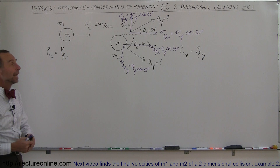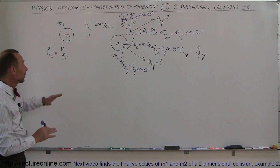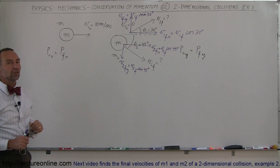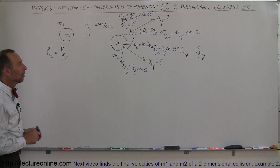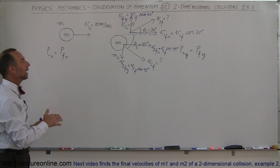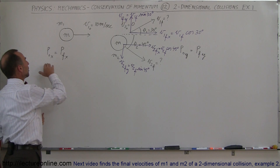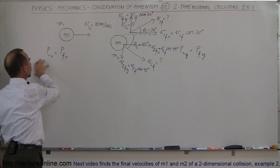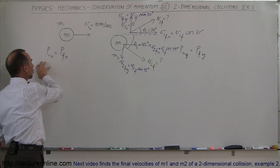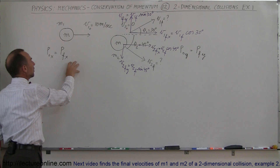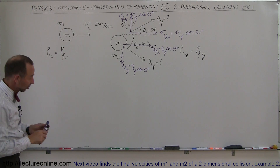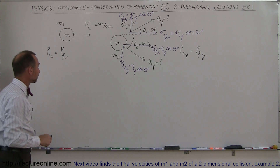We do the same for the second velocity. V2 final in the x direction equals v2 final times cosine of 45 degrees, and v2 final in the y direction equals v2 final times sine of 45 degrees. We'll deal with positive and negative signs later when we write the equations, since we're just finding the components now.